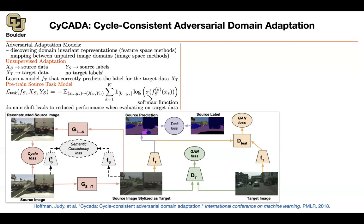There is also consistency needed at the feature level — semantic or concept consistency. The source image and the fake target image need to be classified the same way. A pixel in one domain and the corresponding pixel in the other domain must be classified as the same thing — you don't want labels to flip. You don't want a pixel that was a truck to suddenly become a tree. Since we pre-trained FS, we can push both images through FS and enforce that they classify pixels the same way.